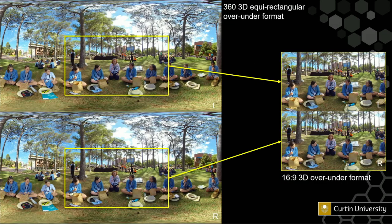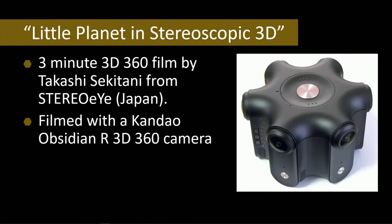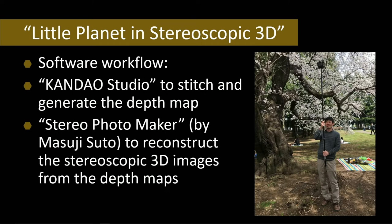With the crop-window approach used in the first film, we cannot go to the poles — the 3D effect would be lost. We have to keep the window around the equator area; it doesn't have to be exactly centred vertically, but we cannot go down to the poles. That's where Takashi's depth-map approach has an advantage. After generating the depth map, he uses a piece of software called Stereo Photo Maker — from a very talented individual in Japan named Masuji Suto. It supports all sorts of stereoscopic workflows including the Looking Glass 3D display and a range of other 3D formats, making it a very capable piece of software.